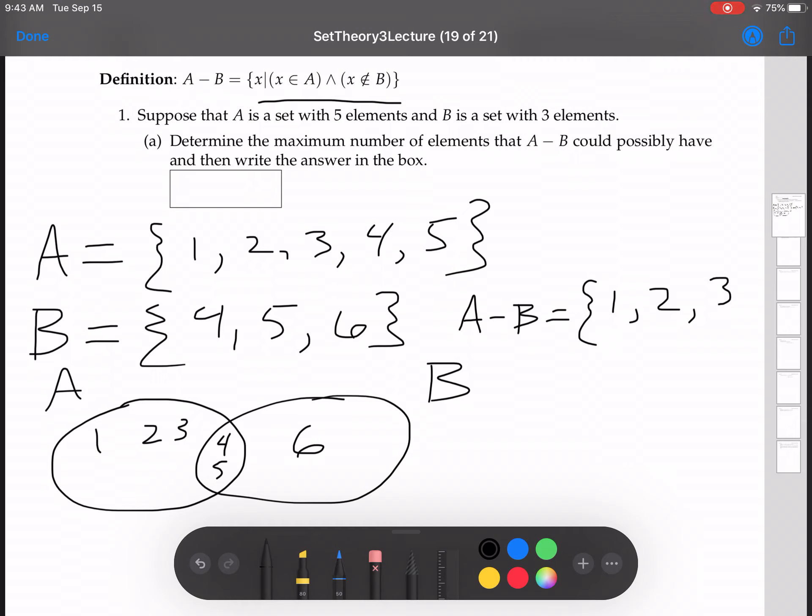Now what about 4? 4 is in A, but 4 is in B, right? So let's see this real fast. Let's see: 4 in A and 4 not in B, right? This is true, this is false. True and false is false. That's why 4 is not in A minus B.